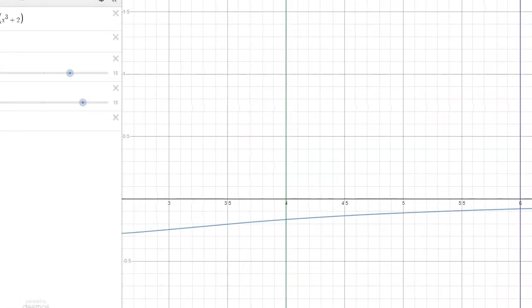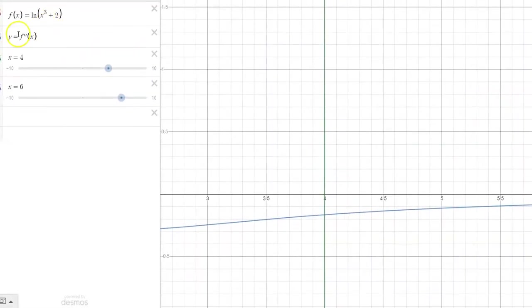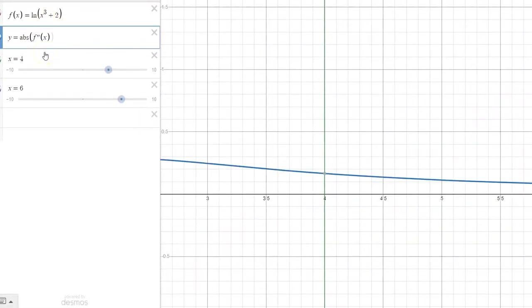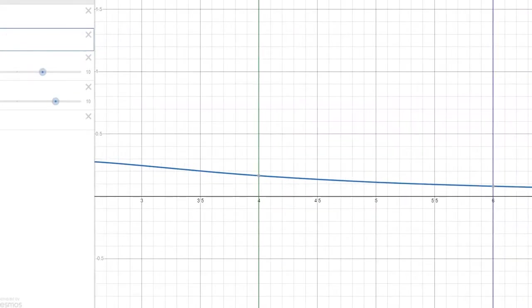And so now that I have all those equations in there, I can actually look at what's going on between 4 and 6. Oh, and I do this every single time I graph this. Absolute value of f double prime x, not just f double prime x. And I think I make that mistake every single time I graph these.